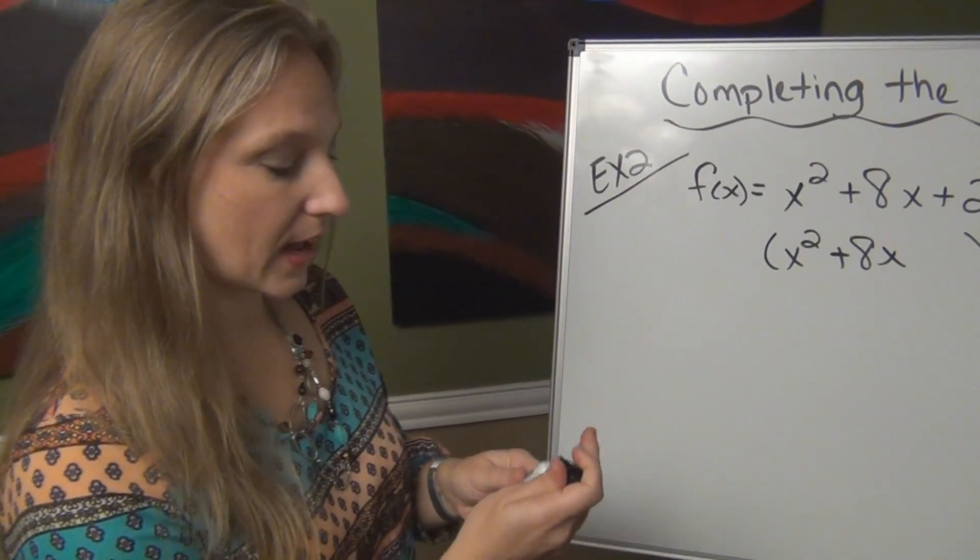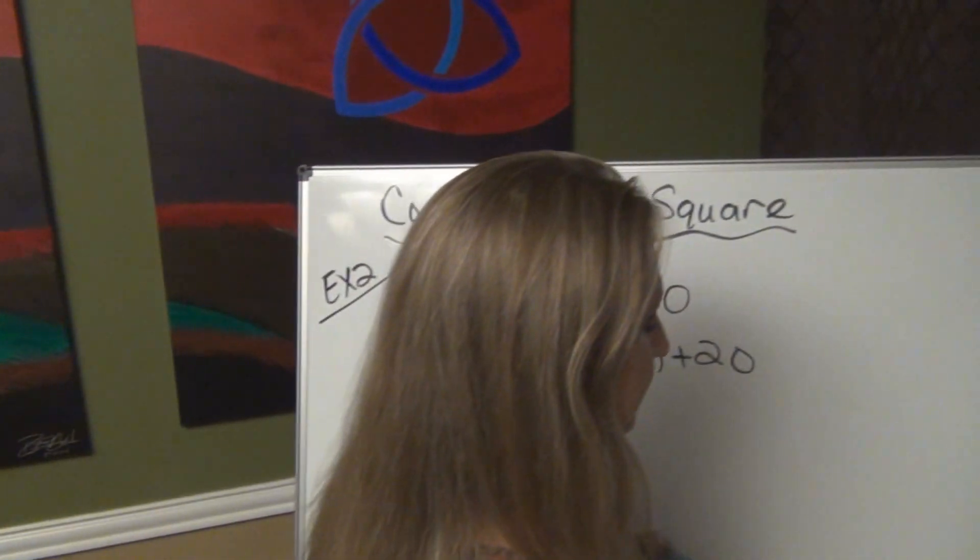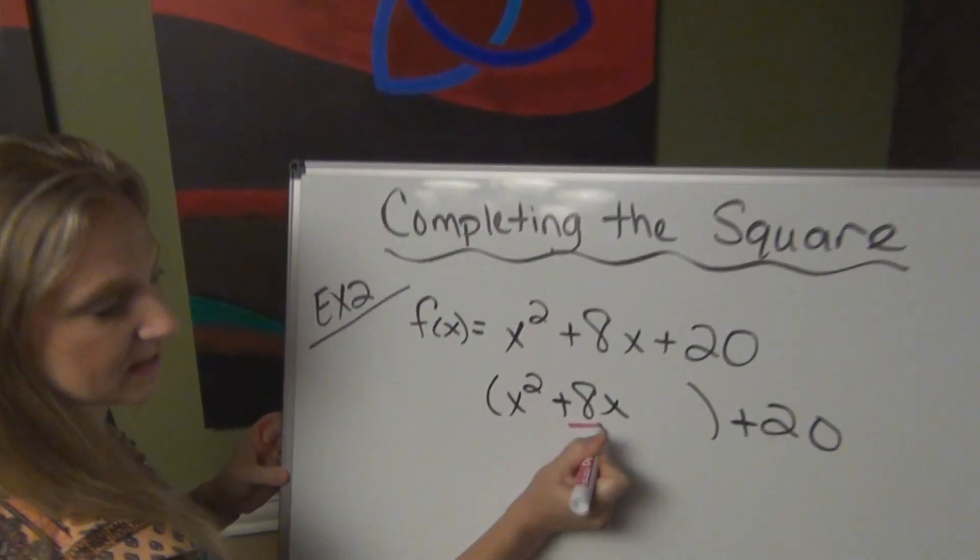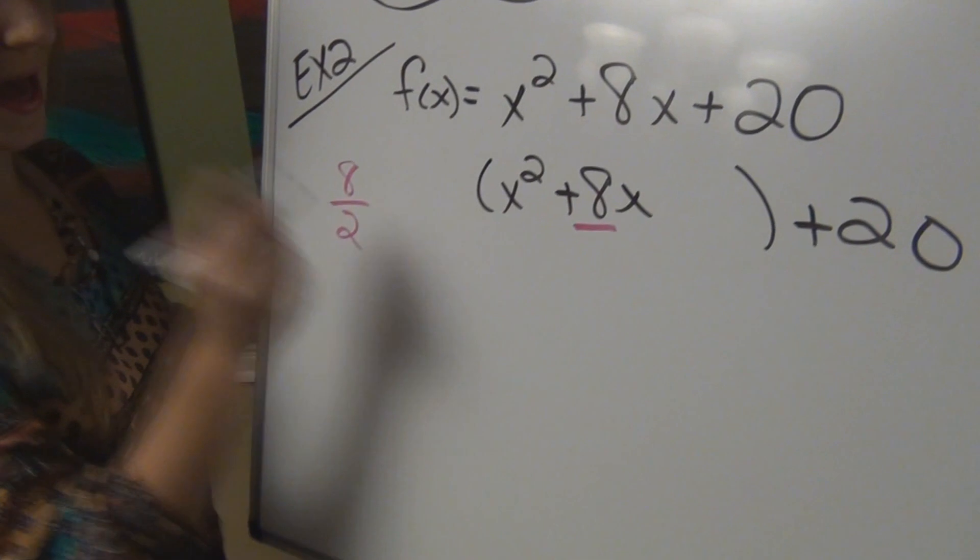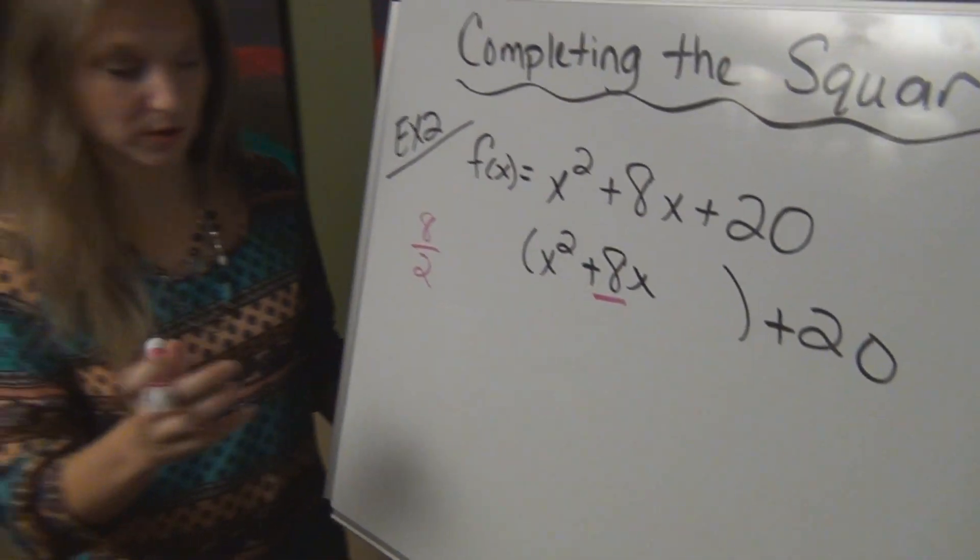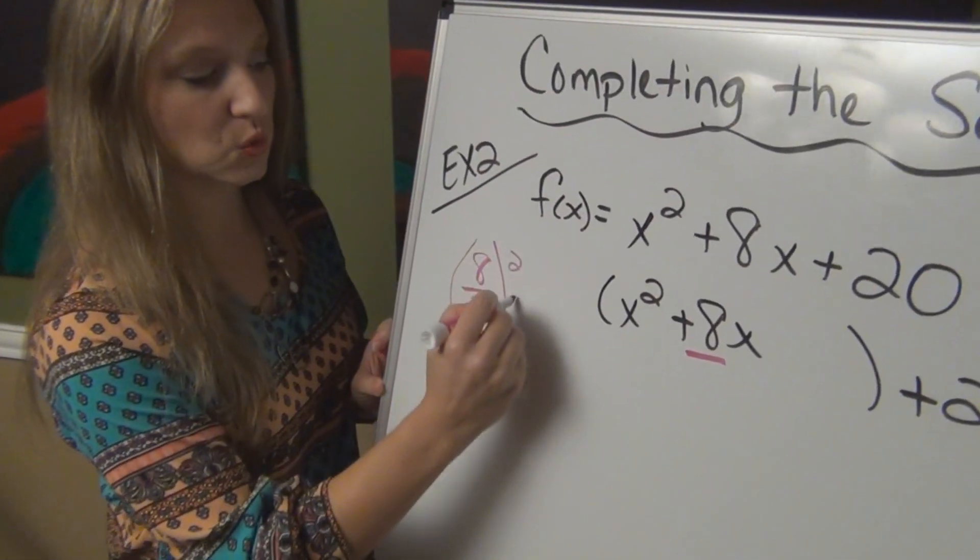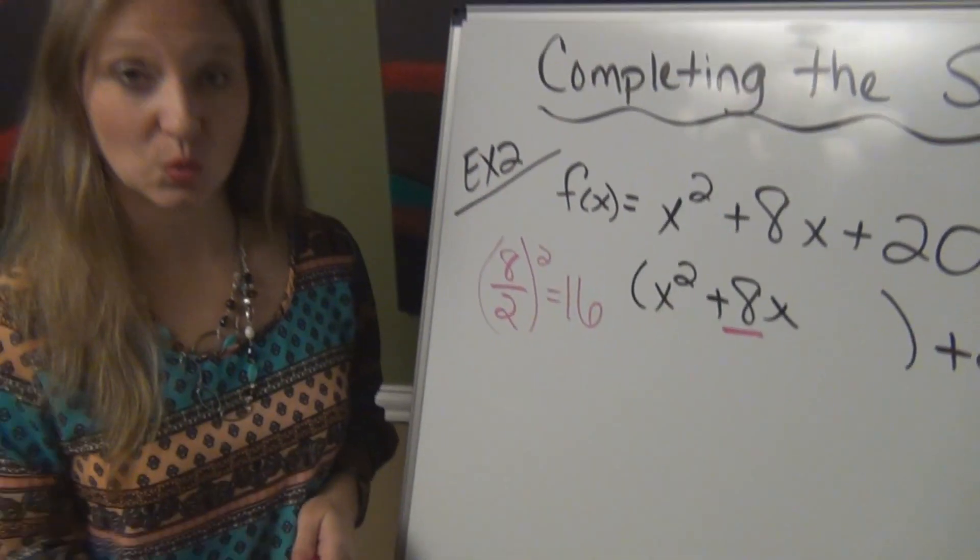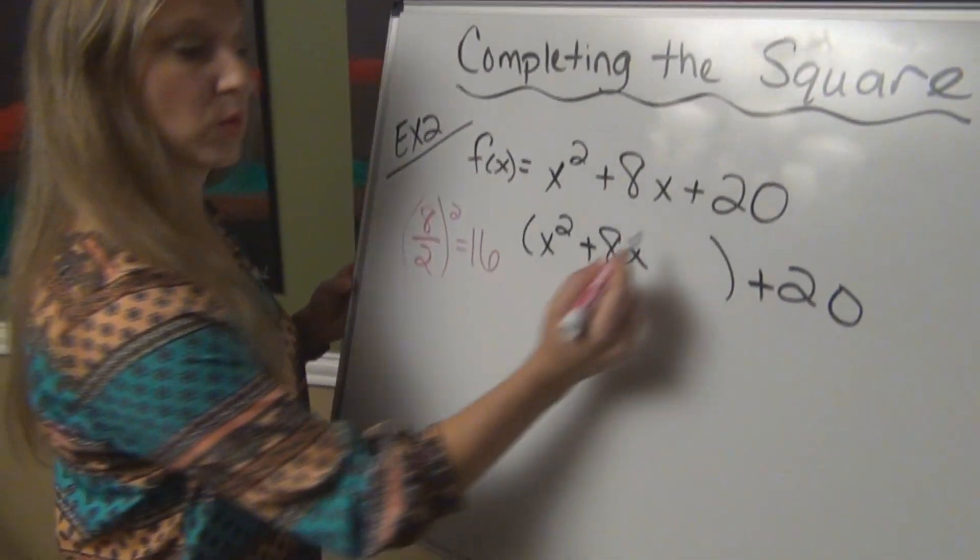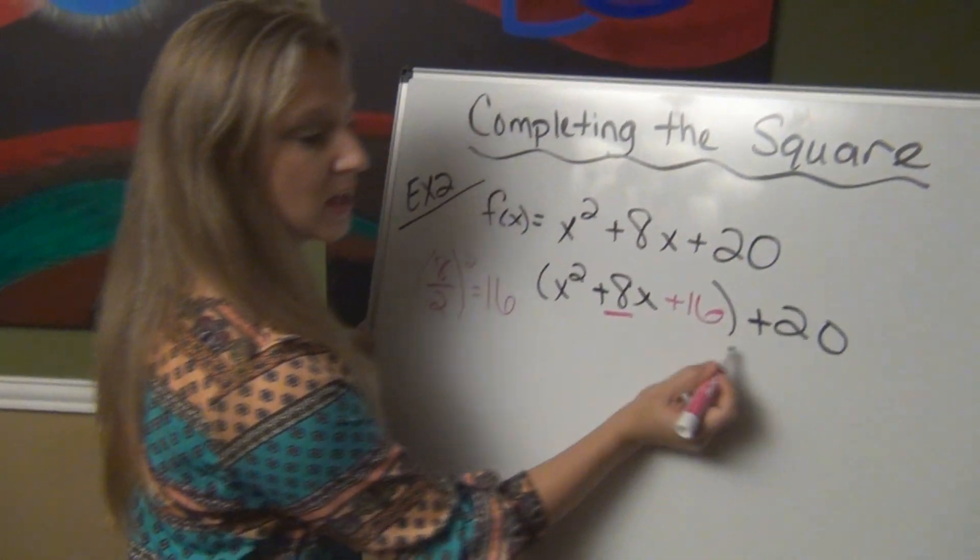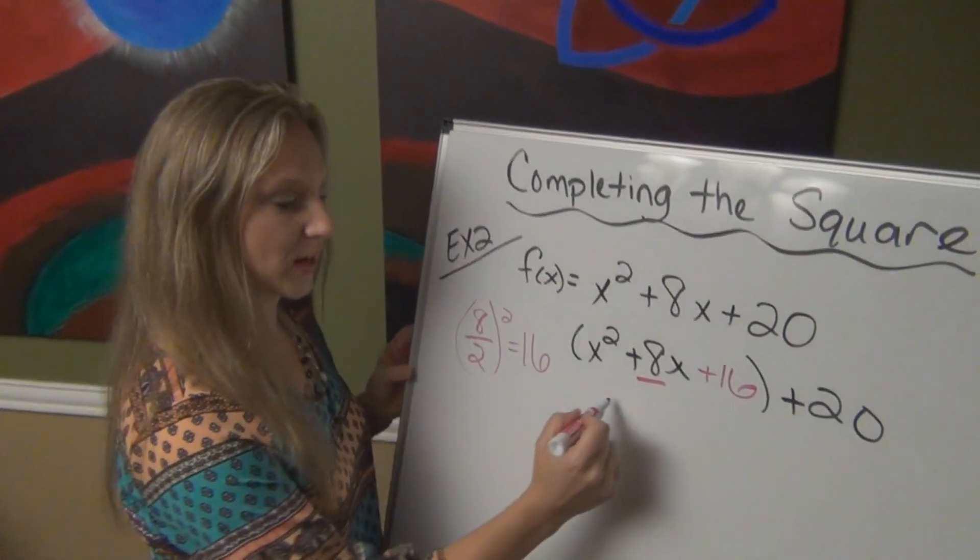I am trying to make this into a perfect square. In order to do that, I'm going to take the 8, the number that's in front of the x, I am going to half it, which is 4, and I'm going to square it, which is 16. Half it, square it. So I'm going to add 16 to make this into a perfect square.